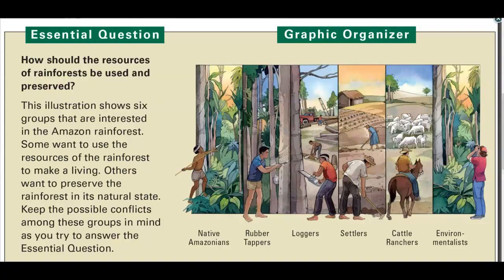The essential question for this lesson is: how should the resources of rainforests be used and preserved? This illustration shows six groups that are interested in the Amazon rainforest — native Amazonians, rubber tappers, loggers, settlers, cattle ranchers, and environmentalists. Some want to use the resources of the rainforest to make a living; others want to preserve it in its natural state. Throughout this lesson we're going to learn about what each group wants from the rainforest.